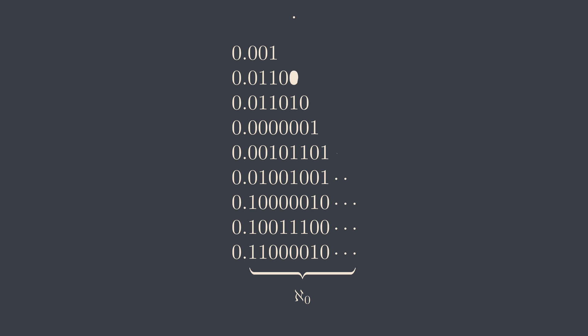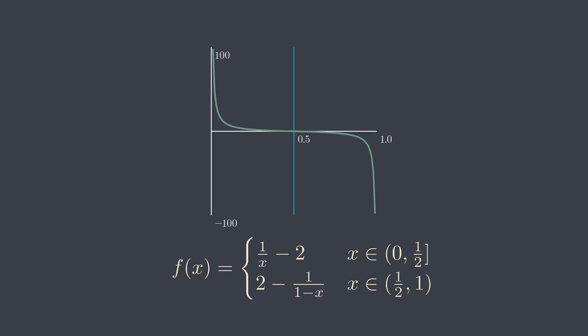Recall that we construct this number by adding digit after the decimal point 1 by 1 up to aleph-0. But each digit has two possibilities. Therefore, the cardinality of all real numbers between 0 and 1 must be 2 to the power of aleph-0. And 2 to the power of aleph-0 is also the cardinality of the whole real line.